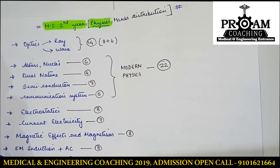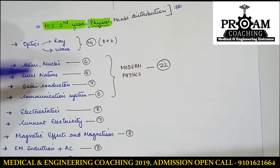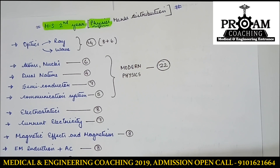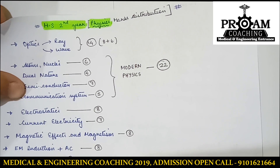Topic-wise, optics consists of 14 marks. In the case of modern physics it consists of 22 marks — above 50%, if I'm not wrong, because total marks are 70. These two topics, optics and modern physics, contribute above 50%, and the rest contributes near about 49-point-something percent.